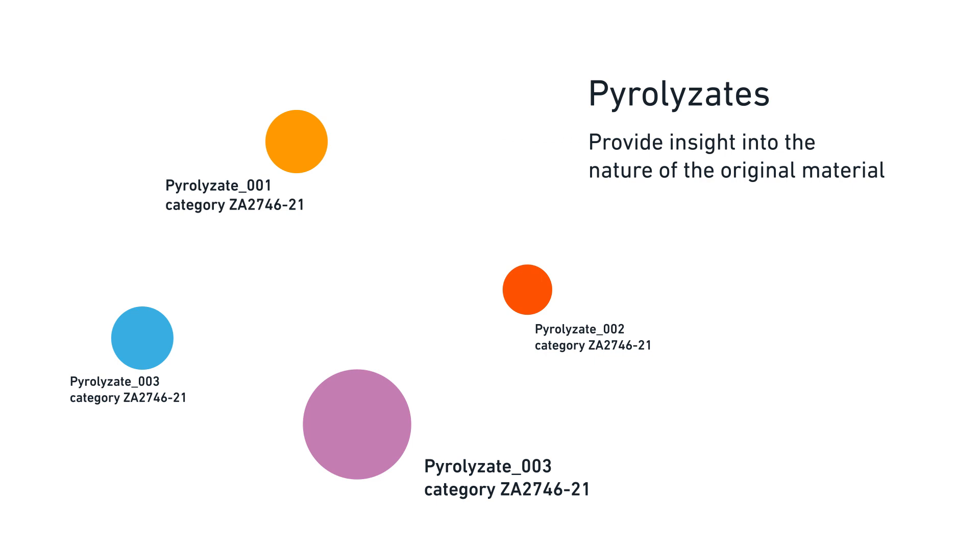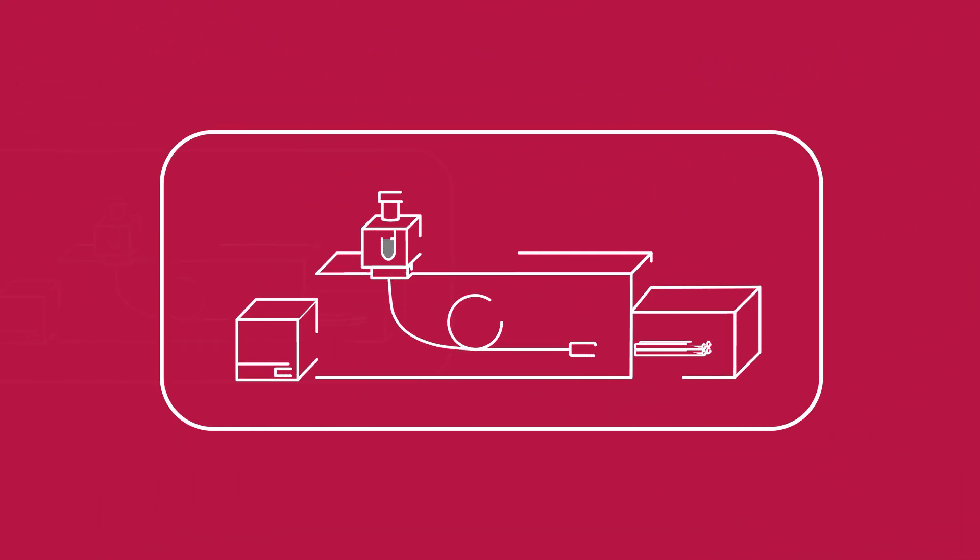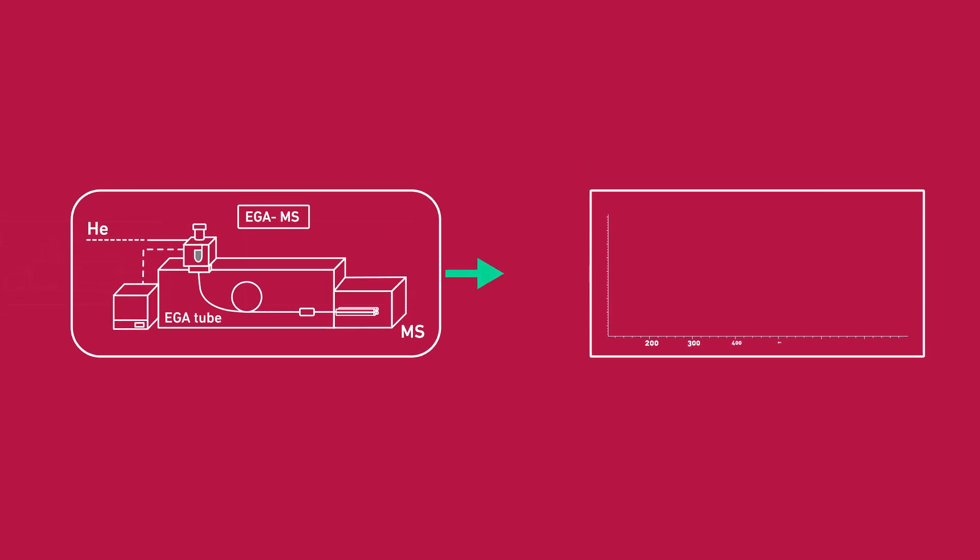The optimum pyrolysis temperature is obtained from the evolved gas analysis thermogram as we discussed in the method map video.